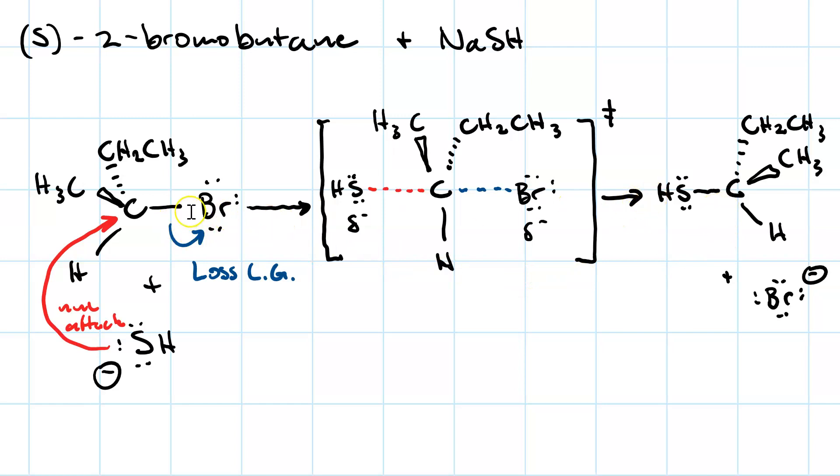If you compare, we started off with our bromide on the right, we end up with our sulfhydride on the left. Furthermore, the methyl group was coming up and towards us and to the left, now it's up and towards us and to the right. The ethyl group, up and away from us and to the left, now up and away from us and to the right. The hydrogen was coming down and flat and to the left, now it's down and flat and to the right. That's inversion. Whereas our substrate was S, our product is R, and it's butane-2-thiol.